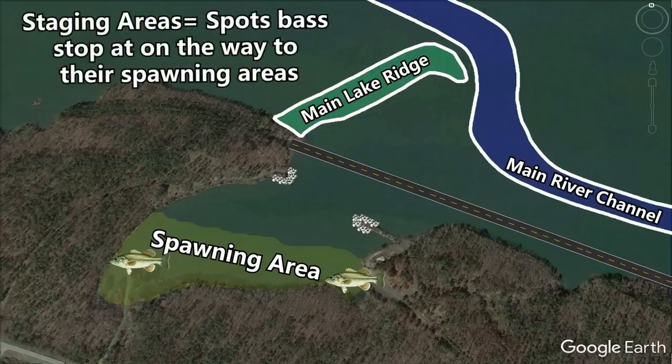You'll often hear people talking about staging areas and that bass are staging on a spot. Staging areas are places bass can feed up before the spawn and they're normally areas like points, ledges, and drains that are just outside the spawning areas that bass can use to ambush bait and crawfish.